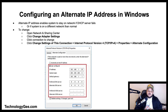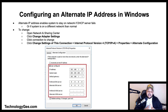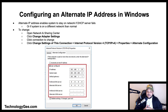Configuring an alternative IP address in Windows: an alternative IP address enables a system to stay on the network if the DHCP server fails or if the system is sometimes on a different network than normal. To change the settings, open the Network and Sharing Center, click Change Adapter Settings, click the connection to change, click 'Change settings of this connection,' go to Internet Protocol Version 4 Properties, then Alternate Configuration, where you can enter the appropriate IP settings.